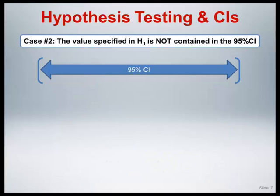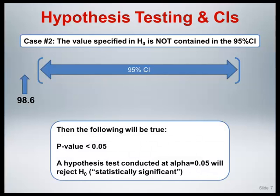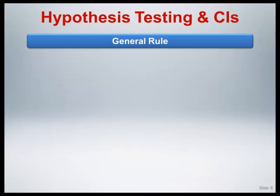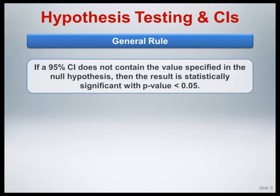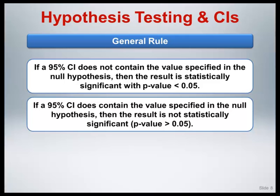In the second case, the value specified in the null hypothesis is not contained in the 95% confidence interval. When this happens, the p-value for the hypothesis test will be less than or equal to 0.05, and the conclusion will be to reject the null hypothesis. This provides us with the following general rule: if a 95% confidence interval does not contain the value of the null hypothesis, then the result is statistically significant with p-value less than or equal to 0.05. If a 95% confidence interval does contain the value of the null hypothesis, then the result is not statistically significant, interpreted as a p-value greater than 0.05.